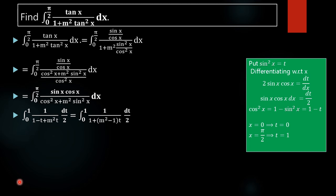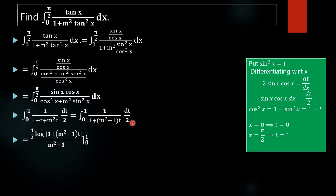Now we integrate this function. The integral of 1 divided by [1 plus (m² − 1)t] dt is log|1 plus (m² − 1)t| divided by (m² − 1). Including the factor of 1/2 out front, our value of the integral is (1/2) times log|1 plus (m² − 1)t| divided by (m² − 1), evaluated from 0 to 1.